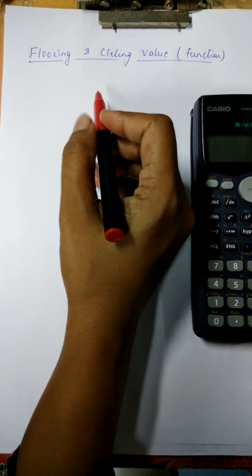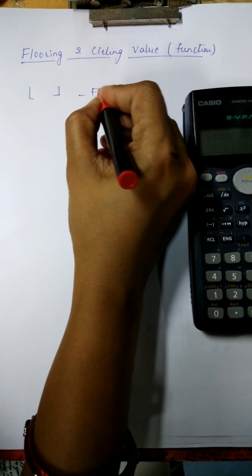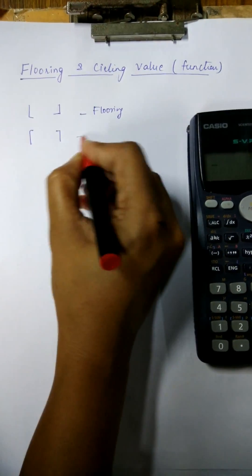First, we should know that the flooring value is shown in this bracket. We show it from the flooring value.